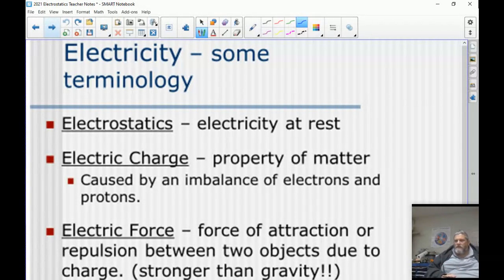Electric charge is considered to be a property of matter, and it's caused by an imbalance of electrons and protons. It's something that's considered to be negative if it has more electrons than protons. It is considered to be positive if it has more protons than electrons.